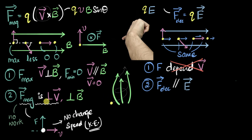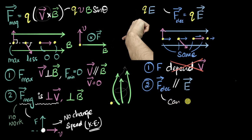What a beautiful result! Now, can the electric force change the speed of a particle? The answer is yes, because the electric force does not depend on the velocity direction. It can definitely change the speed — it can do work. In fact, that's one of the reasons why we think about electric potential, because the electric force can do work. But magnetic forces cannot do work. Huge difference.